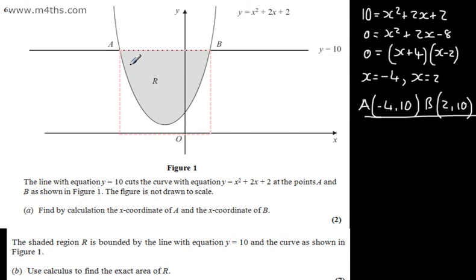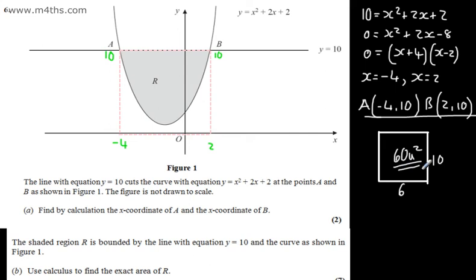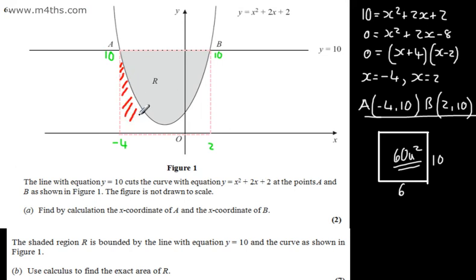Point A has x-coordinate negative 4 with y equals 10, and point B has x-coordinate 2 with y equals 10. So we have a rectangle that is 6 by 10, giving an area of 60 square units. If I now integrate from negative 4 to positive 2, that gives me the area under the curve, which I then subtract from the rectangle — essentially cutting out the part below the red line.